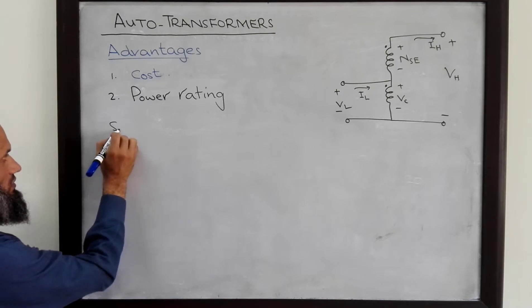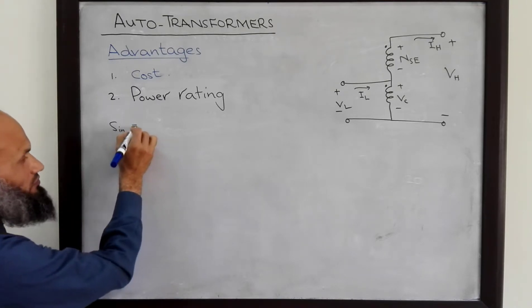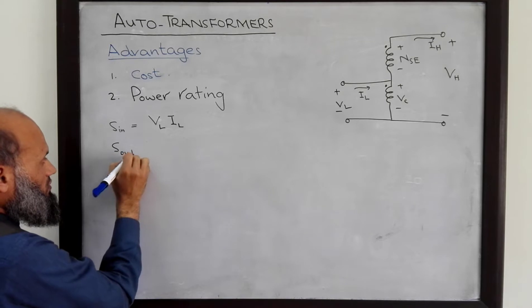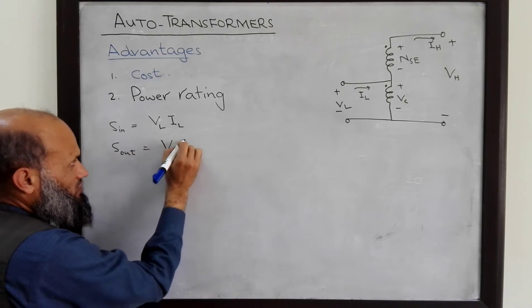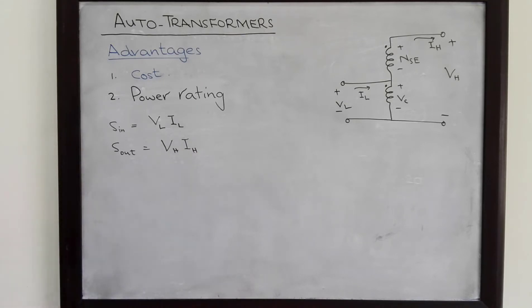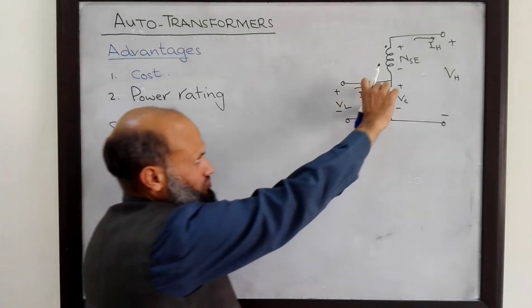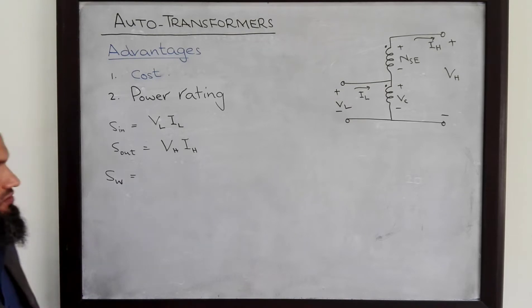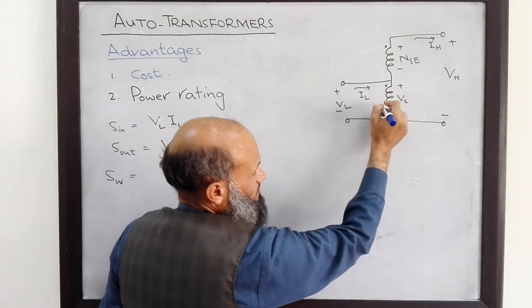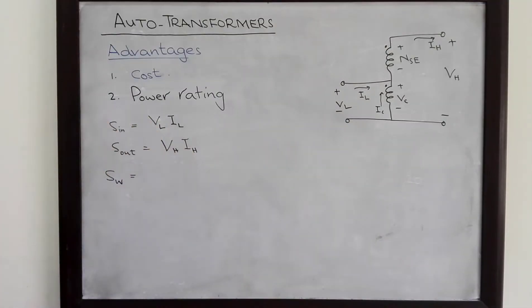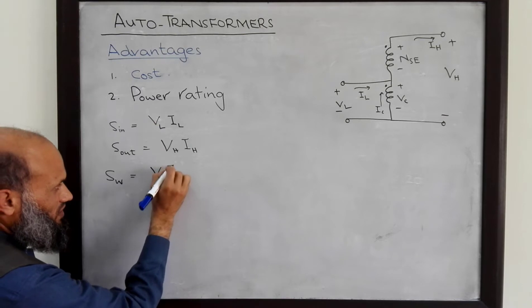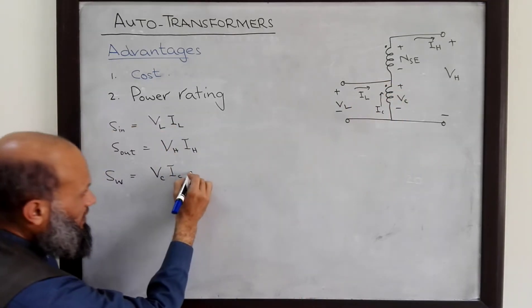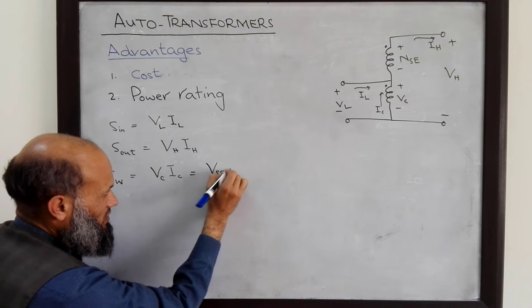The input apparent power is simply the product of voltage and current. The output power is equal to VH times IH. Now, the power which flows through the magnetic circuit — let's call it the winding power — is equal to Vc multiplied by Ic. Vc multiplied by Ic is the power flowing through the magnetic circuit, and this is also equal to Vse times Ise.